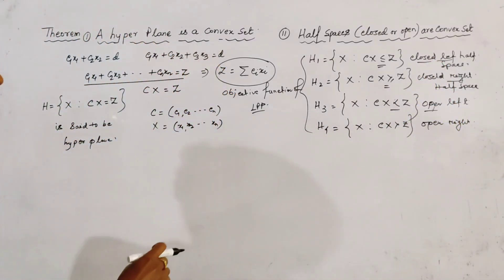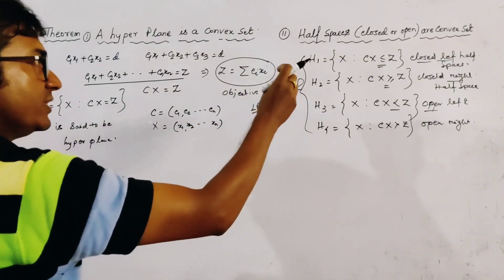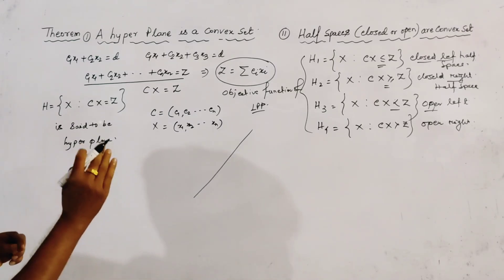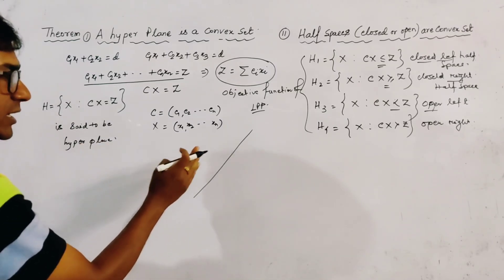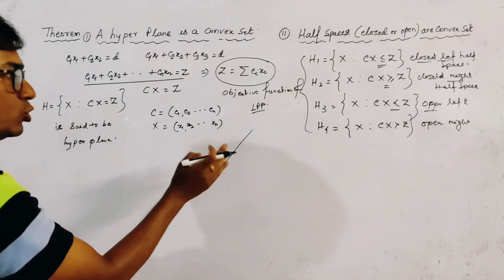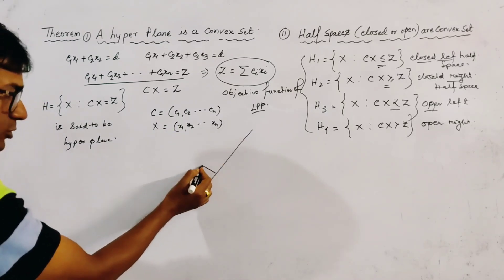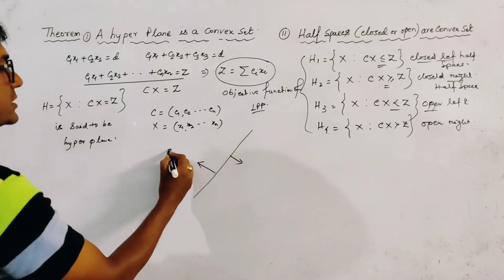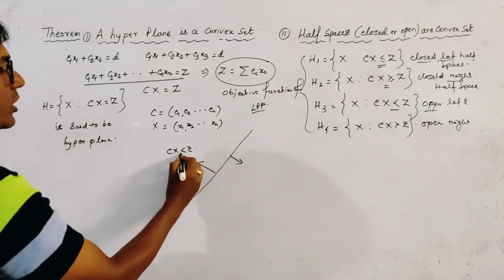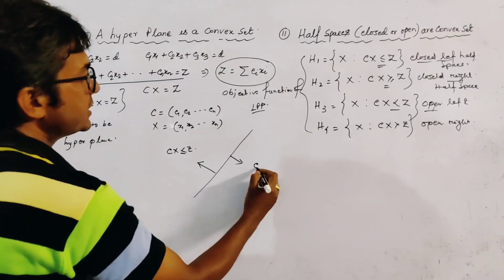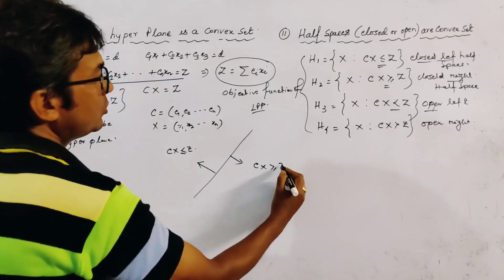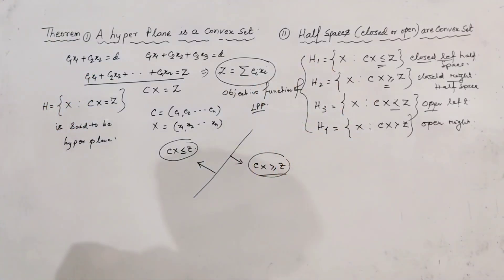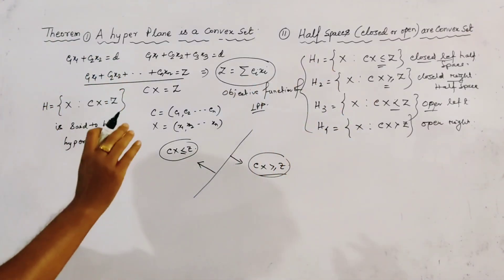This definition is given because when we draw a straight line in a plane, the straight line divides the plane into two parts — the upper portion and the lower portion. The upper portion means cx < z or cx ≤ z, and the lower portion means cx ≥ z. From this concept we get four definitions, which are the half spaces, both closed and open.